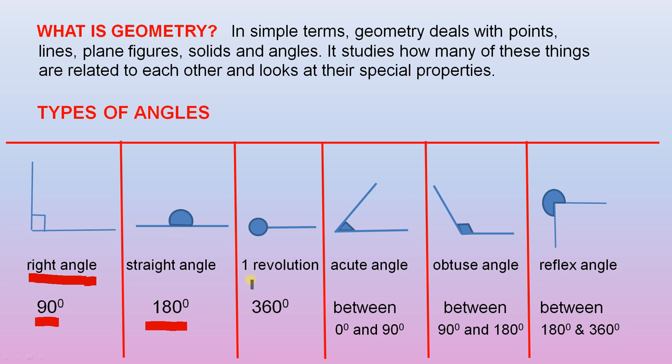The next angle is a revolution, which is 360 degrees, and that's just similar to a circle. The next angle is an acute angle, and that is anywhere between 0 degrees and 90 degrees. And here is your diagram.